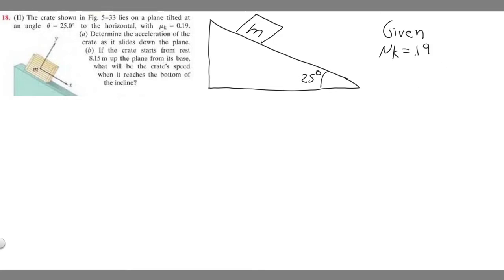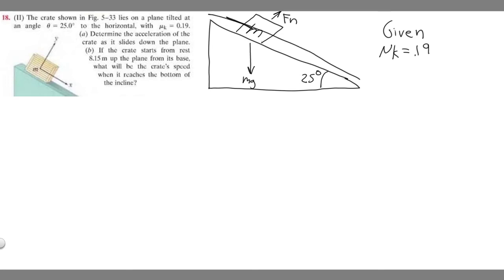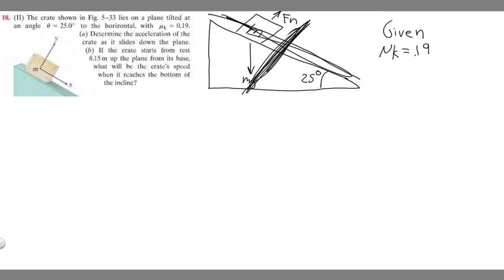Now we want to do a free body diagram and label the different forces acting on our box. Straight down we have the force of gravity, mg. We also have the normal force — it's not straight up but perpendicular to the surface. For these incline problems, treat the slope as the x-axis and perpendicular to it as the y-axis.